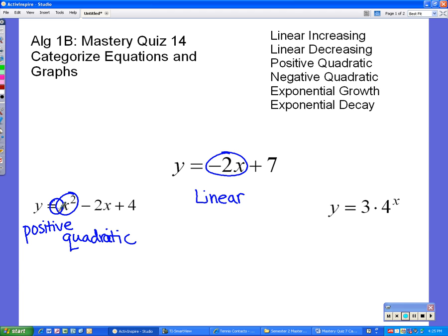Similar to what we did with the quadratic, we look in front of that x. And we notice we have a negative 2. Okay? That means that our slope is negative and our line is going down or decreasing. So we know that this is linear decreasing. And we're done with equation number two.